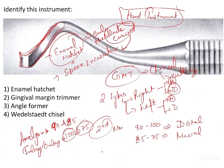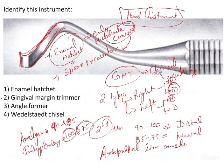Another use of the GMT is rounding or beveling of the axiopulpal line angle in two-surface preparations. So whenever you need to round or bevel the axiopulpal line angle, the GMT is the instrument of choice.